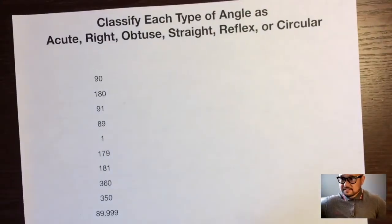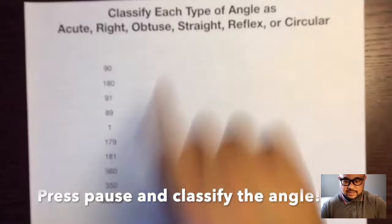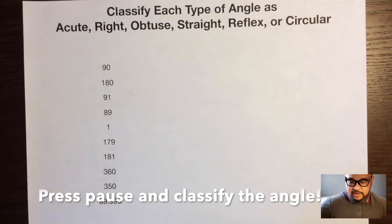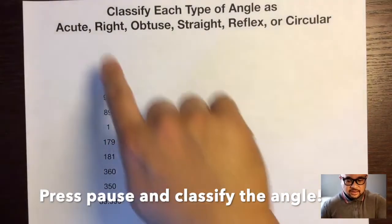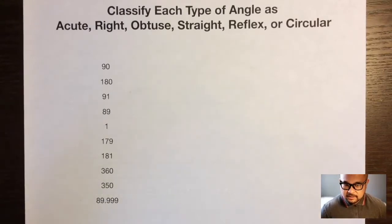So let's get some practice. Classify each of these numbers right here. So press pause, and then right next to those numbers, write what type of angles they are. Acute, right, obtuse, straight, reflex, or circular. So press pause, and once you're done, unpause.